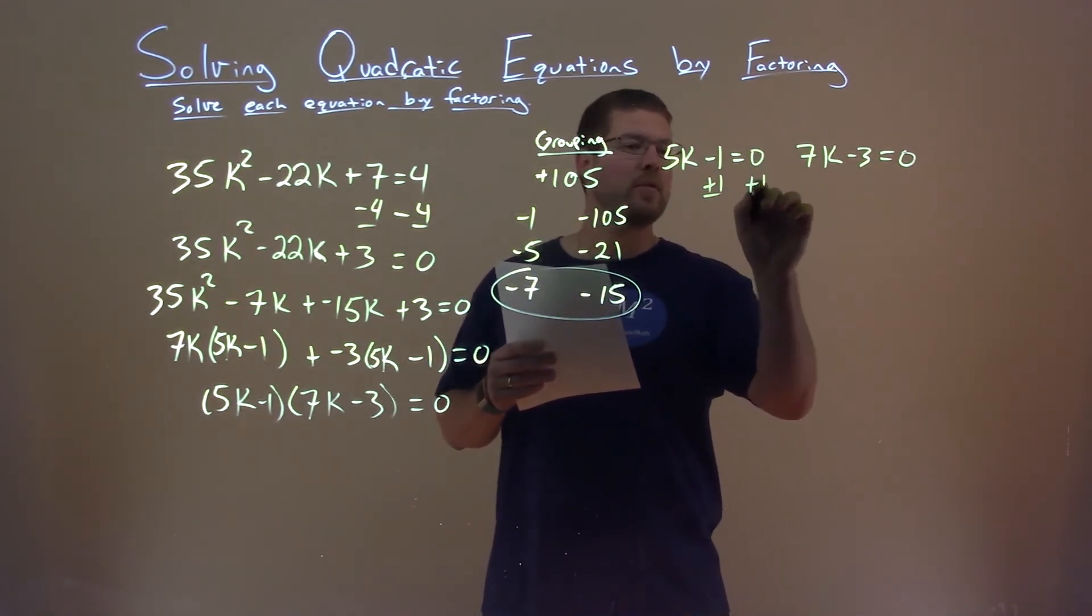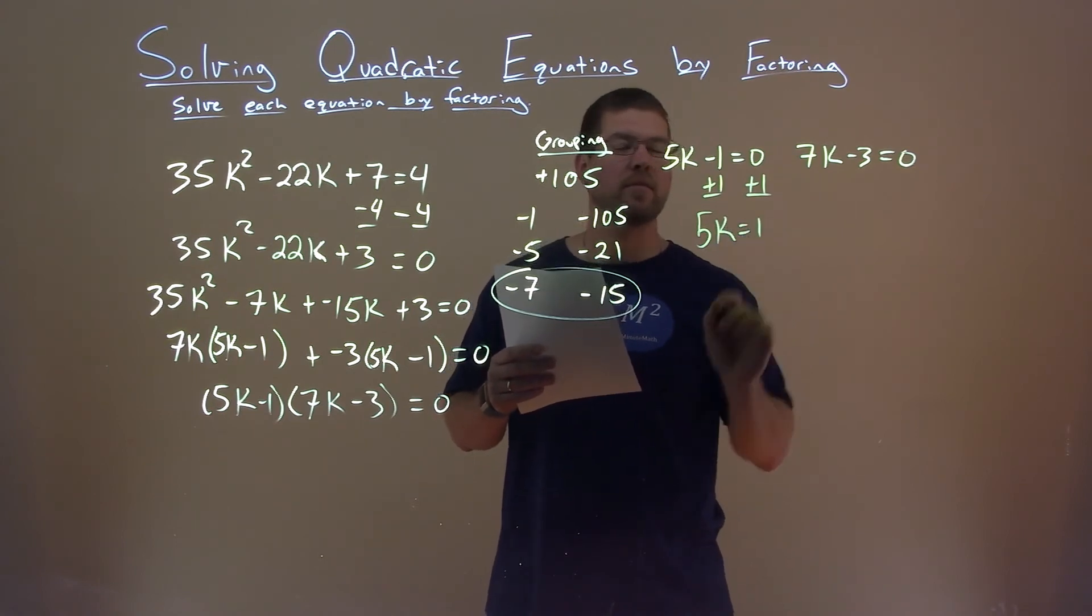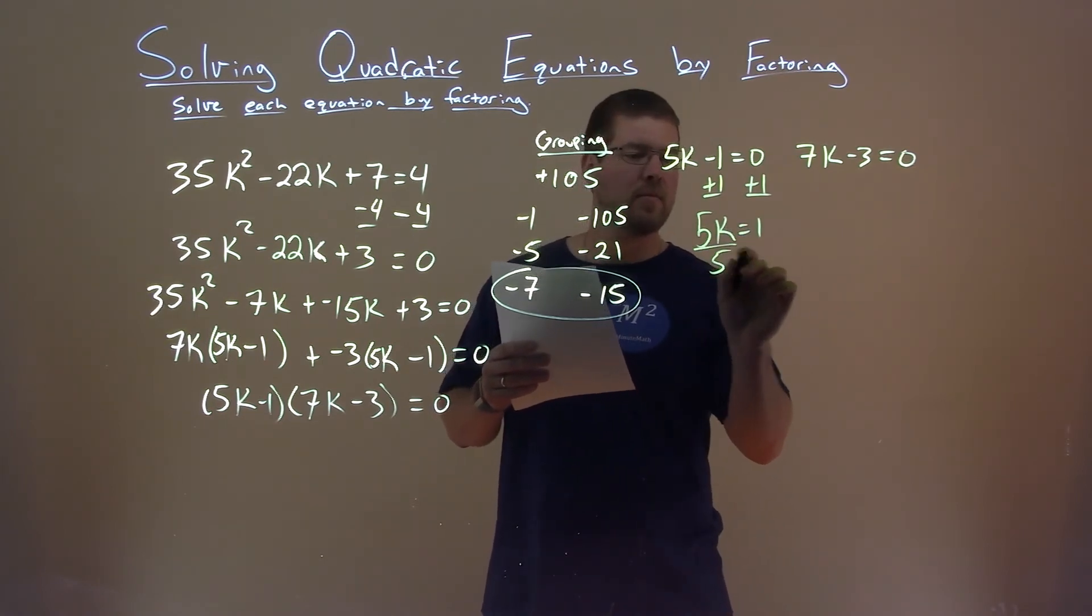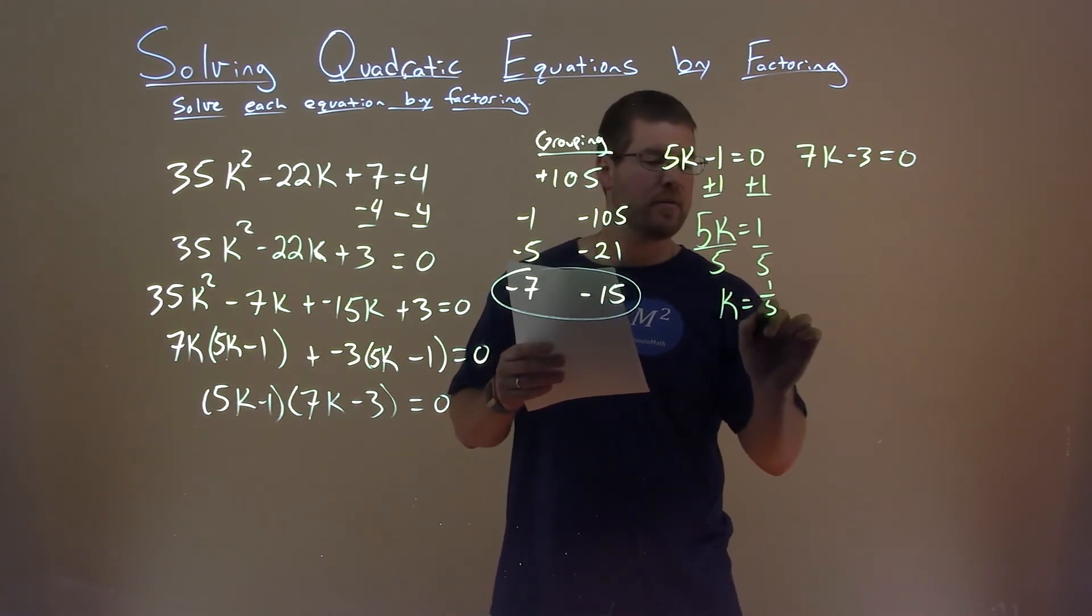We add 1 to both sides, and 5k equals positive 1. So divide both sides by 5, and k is by itself, but it's equal to 1 fifth.